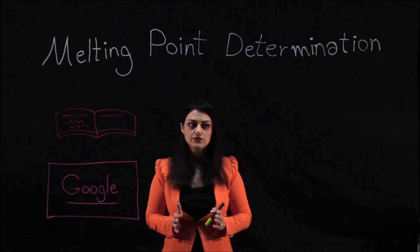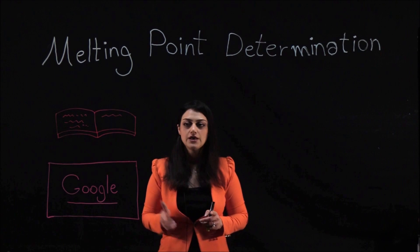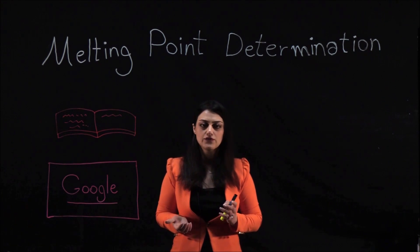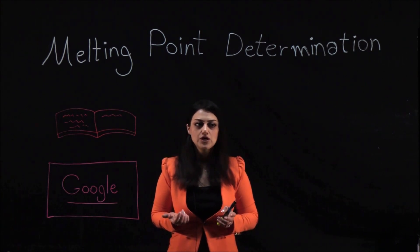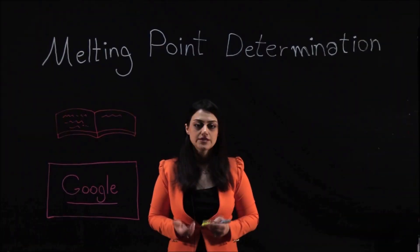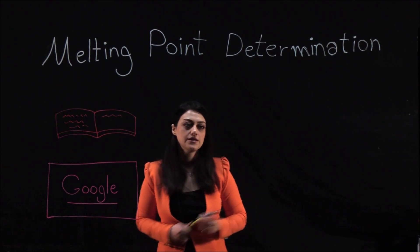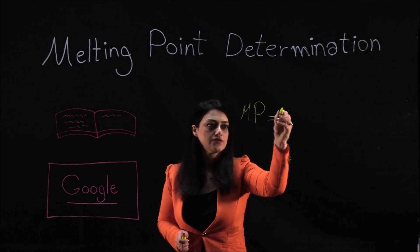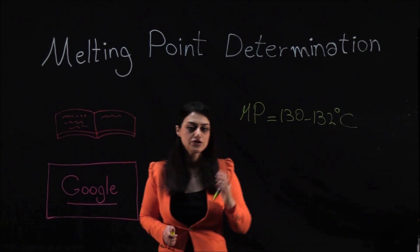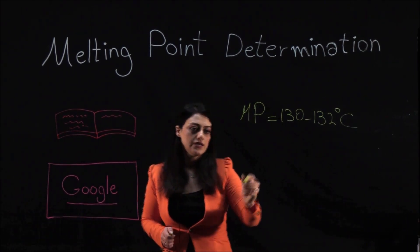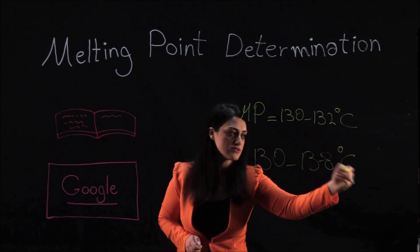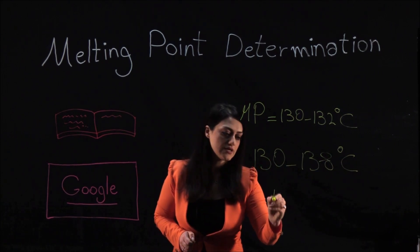For many labs, you will be asked to look up the melting point of your compound in a textbook or trustworthy online resource, and then test the melting range of your experimentally derived compound. You will compare these numbers to obtain a sense of purity. For example, if the melting point of your compound in the literature is around 130 to 132 degrees Celsius, but when you measure the melting point of your compound it ranges from 130 to 138 degrees Celsius, it means your compound includes impurities.